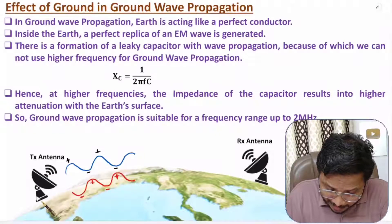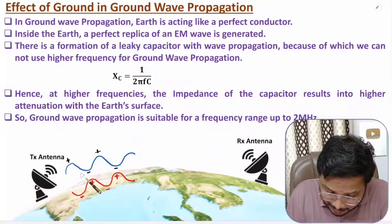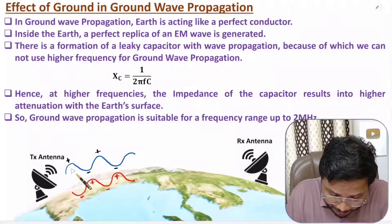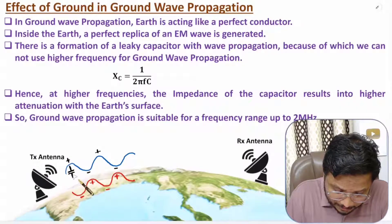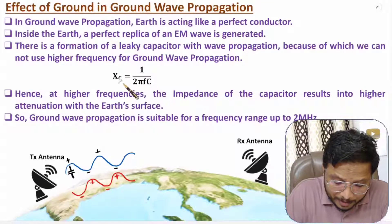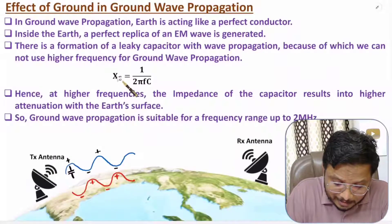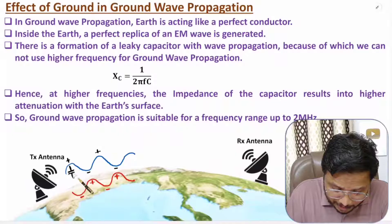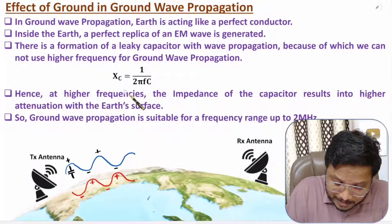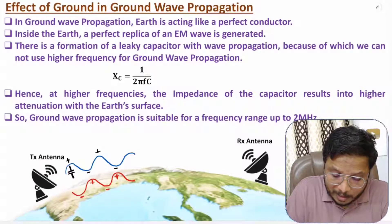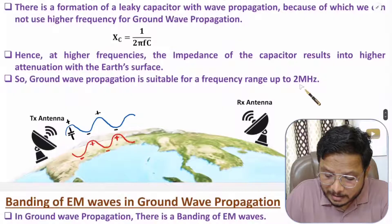As the signal propagates, its strength decreases because of a leaky capacitor that is generated. If this capacitor has capacitance value C, then the impedance due to the leaky capacitor will be 1 divided by 2πfC. If frequency is higher, the value of Xc decreases, meaning the EM wave gets shorted inside the earth. For longer distance propagation, Xc should be higher, so frequency must be kept lower.